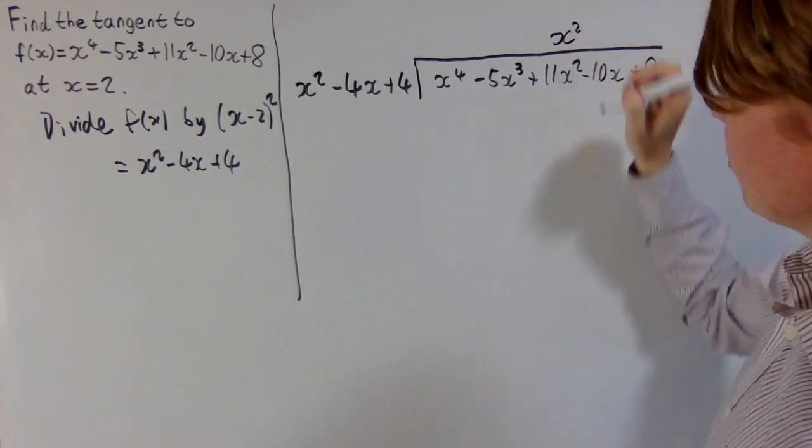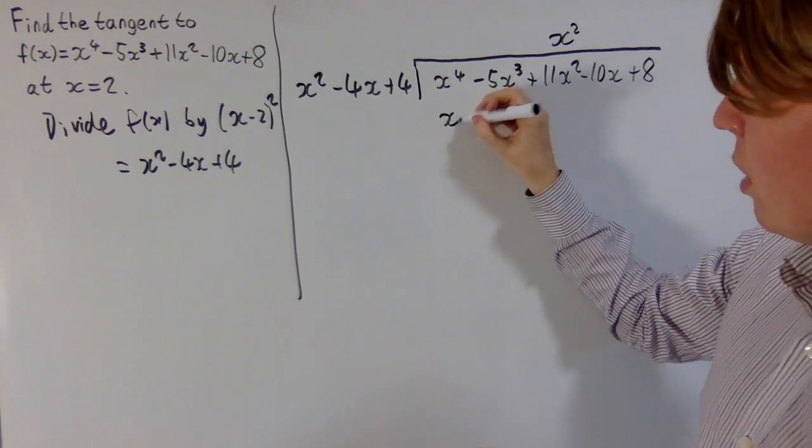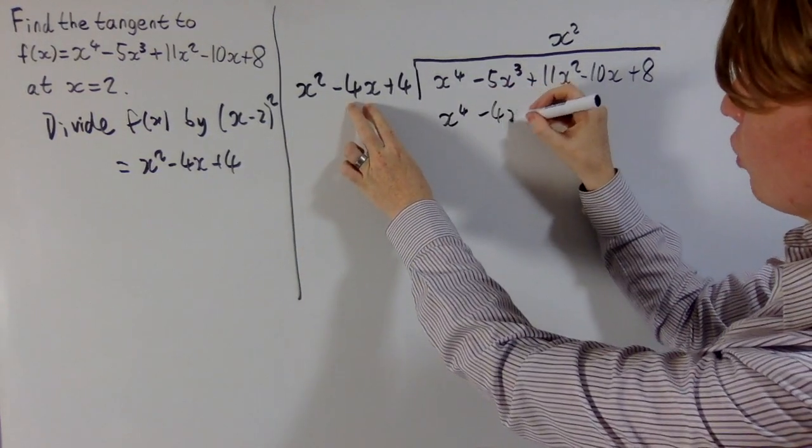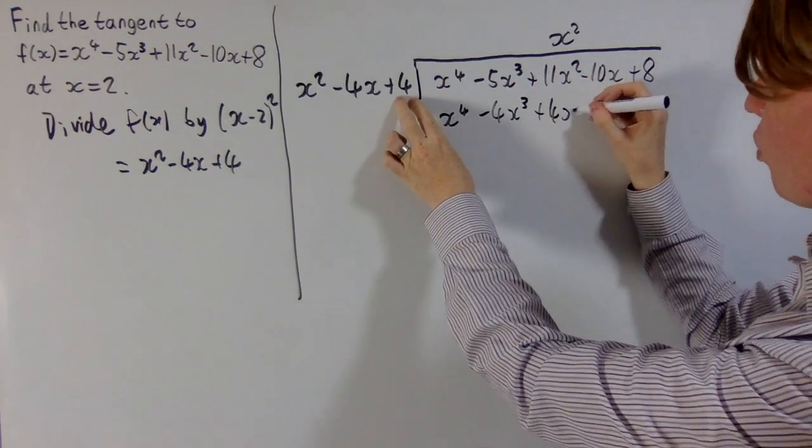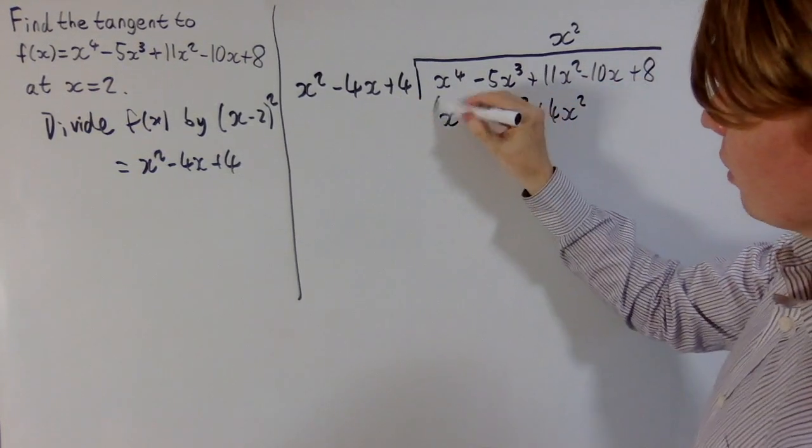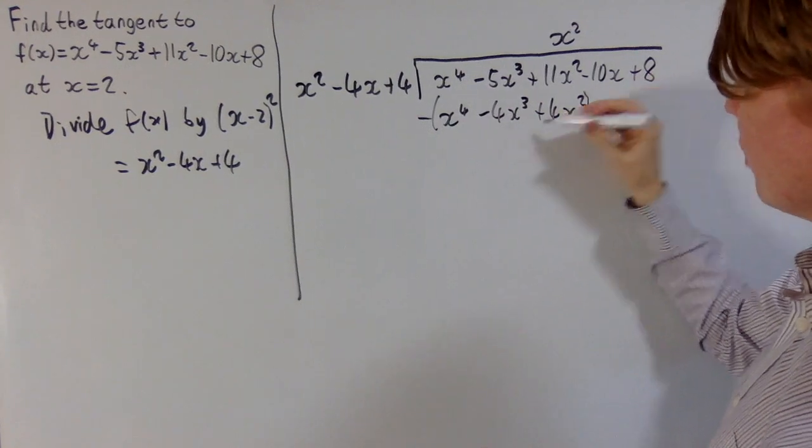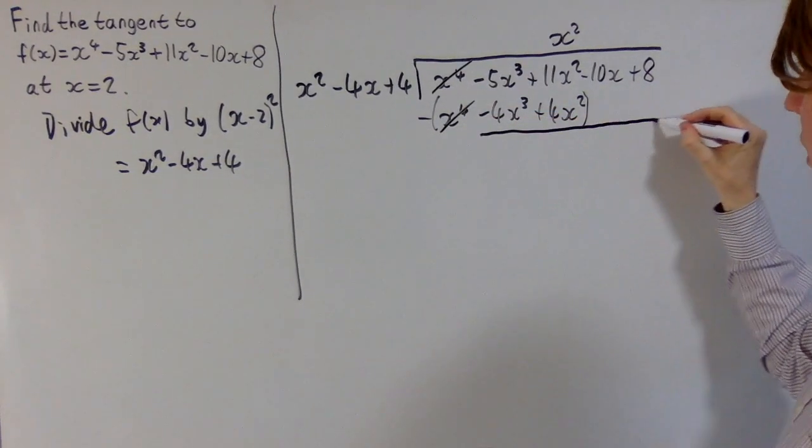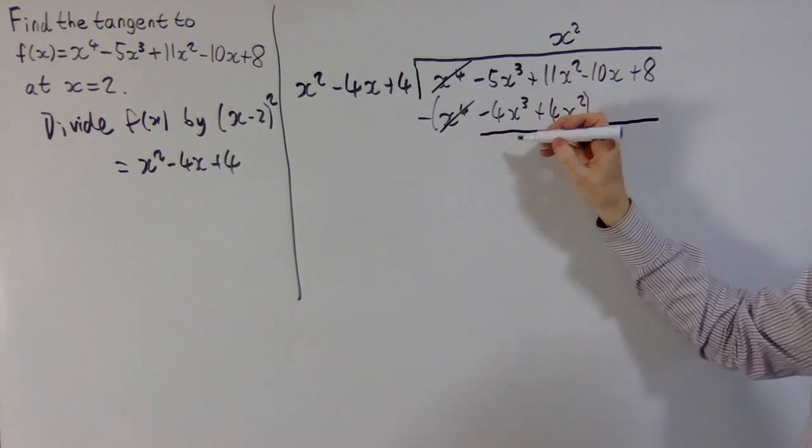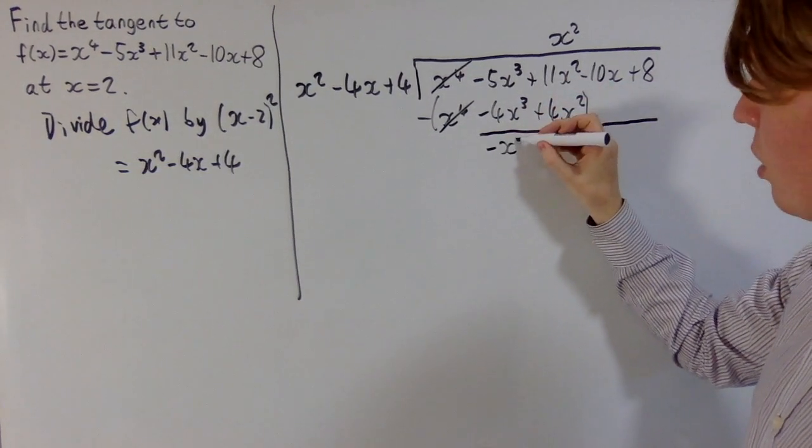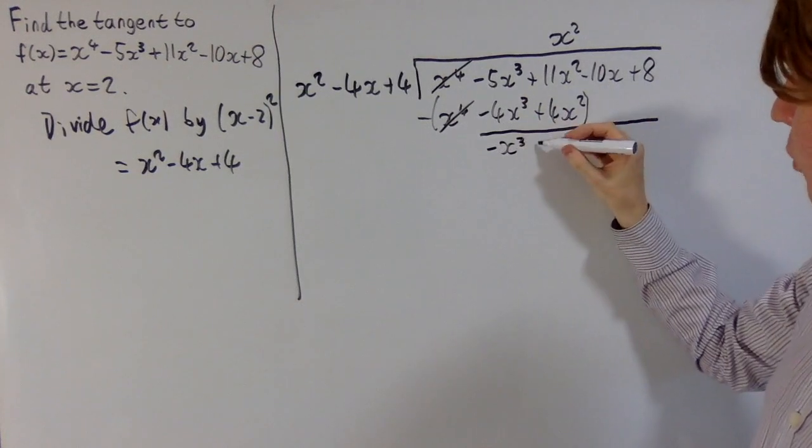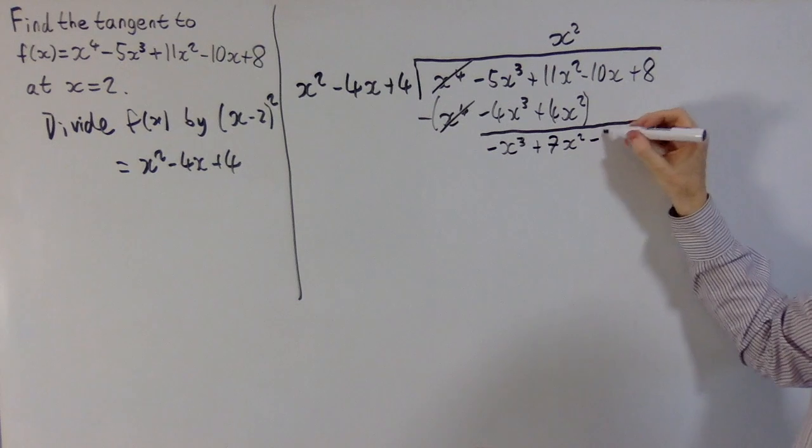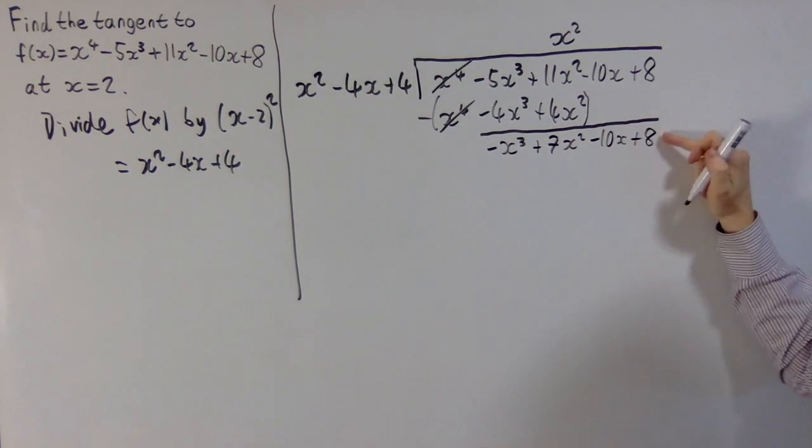So we bank an x squared, we know that's going to be in the quotient, you get x squared times x squared gives x to the 4, then minus 4x cubed, and then plus 4x squared. And then working towards finding what the remainder is, we've got to take all of this away. By design your x to the 4 terms cancel, they disappear, and you're left with minus 5x cubed minus minus 4x cubed gives you a negative x cubed. 11 take away 4 gives you a plus 7x squared, and then minus 10x plus 8, they stay as they are.